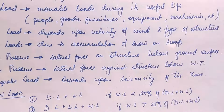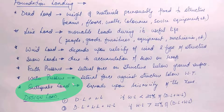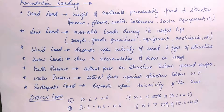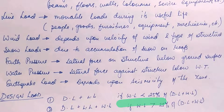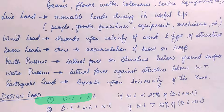Earthquake loads depend upon the seismicity of the zone, and we add some loading for earthquake loads as well. Our design load is generally the sum of dead load plus live load. If wind load is less than 25% of (dead load plus live load), we neglect wind load. If wind load is more than 25% of (dead load plus live load), then we consider wind load in our design load calculation.